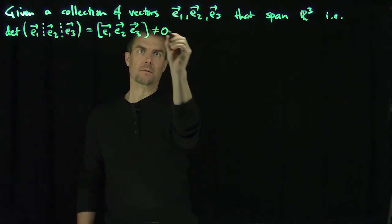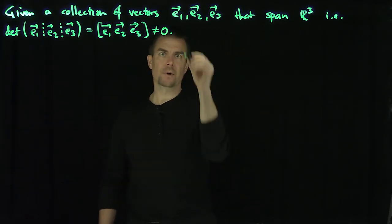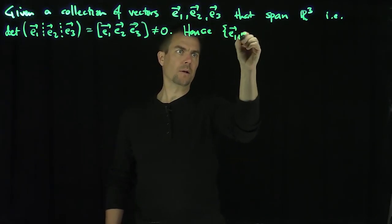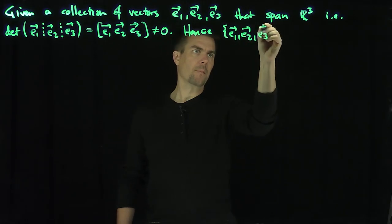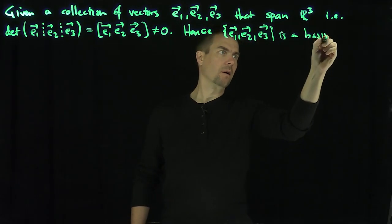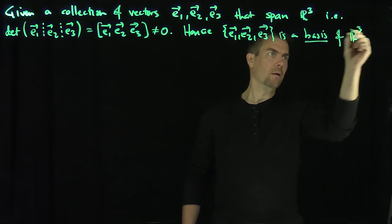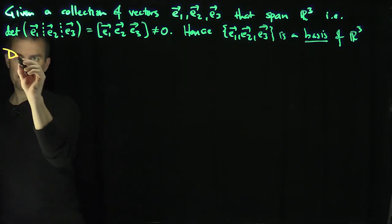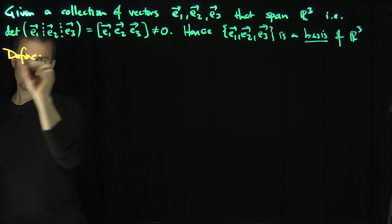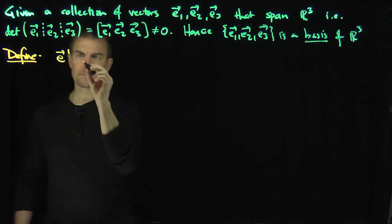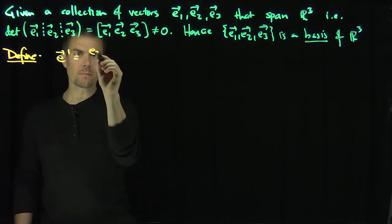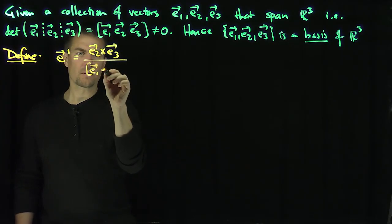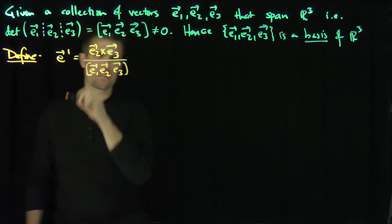This collection is not zero. So in other words, this collection is a basis, right? Hence, E1, E2, E3 is a basis of R3. I'm going to consider a reciprocal set of vectors. So define E1 upper to be E2 cross E3 lower over this determinant, E1, E2, E3.